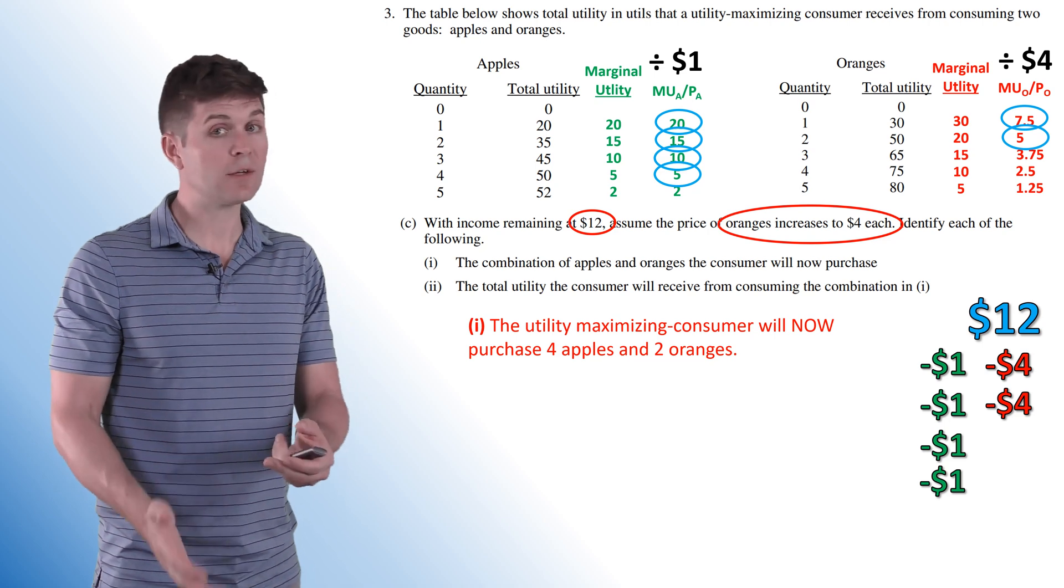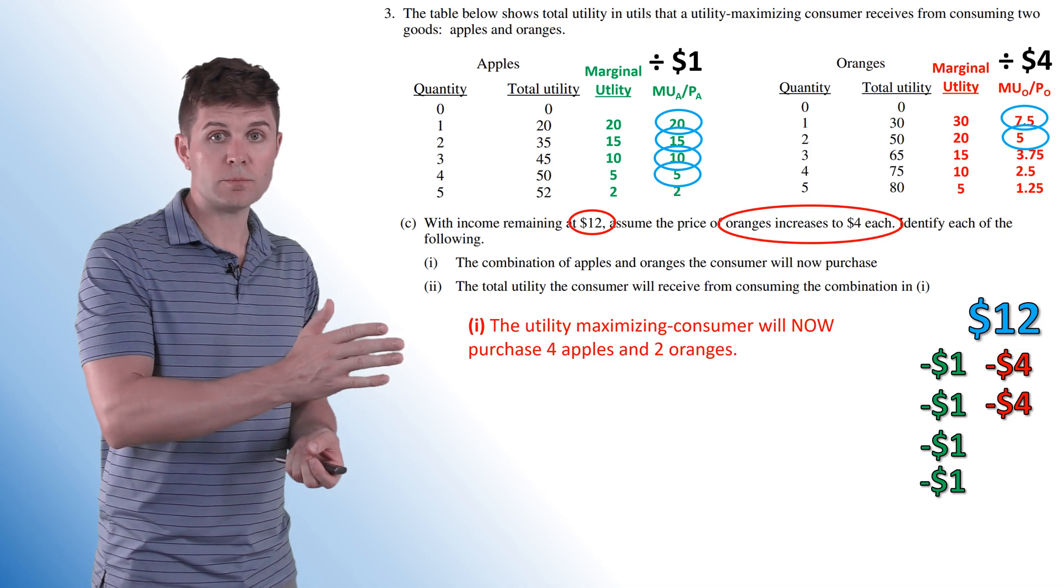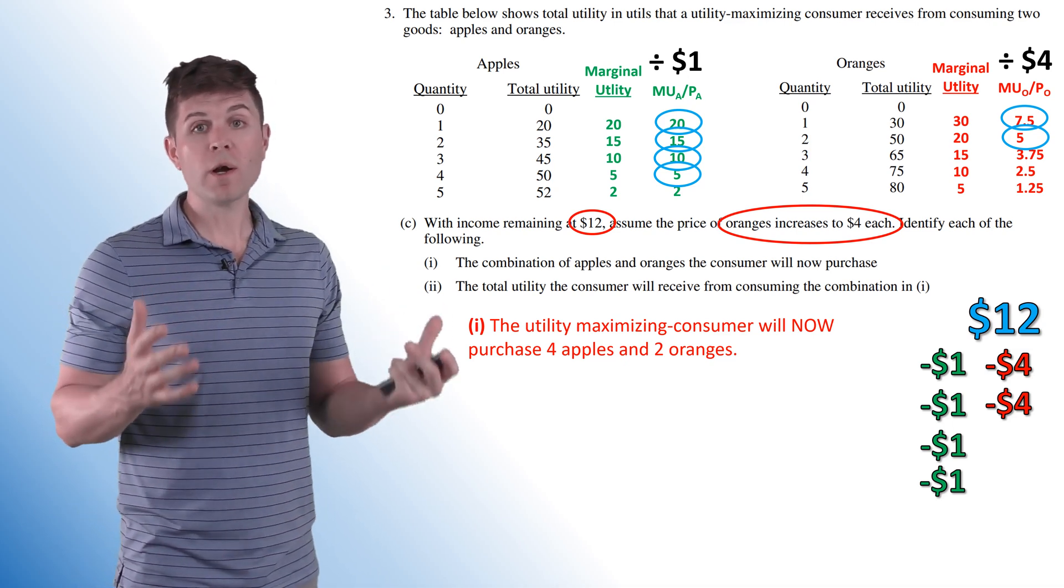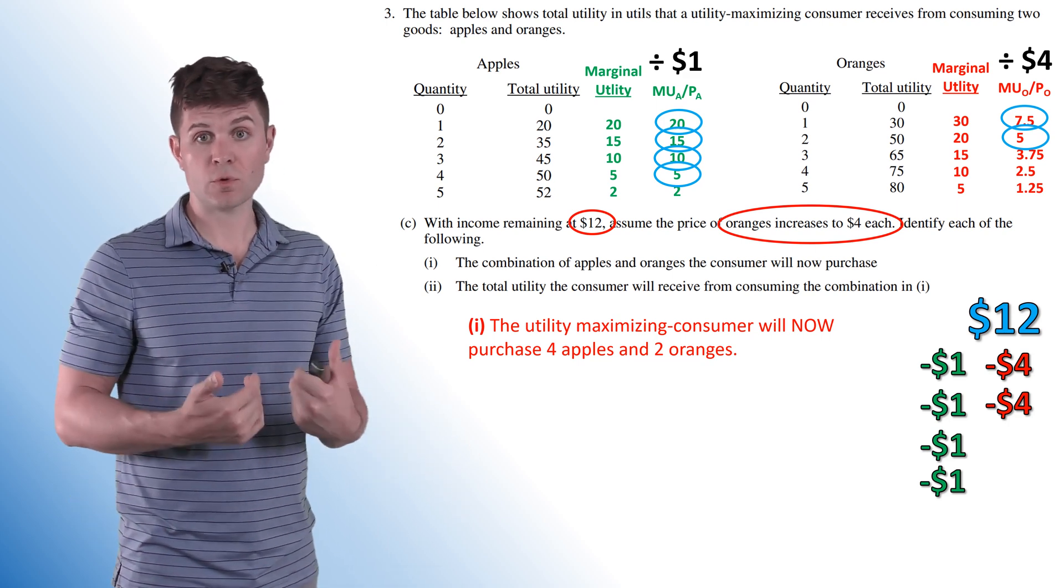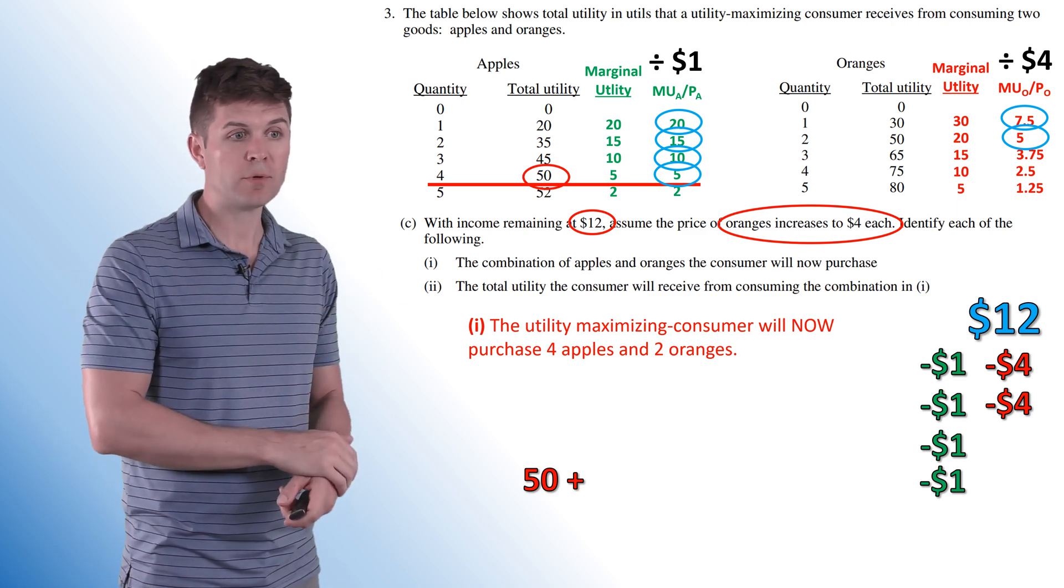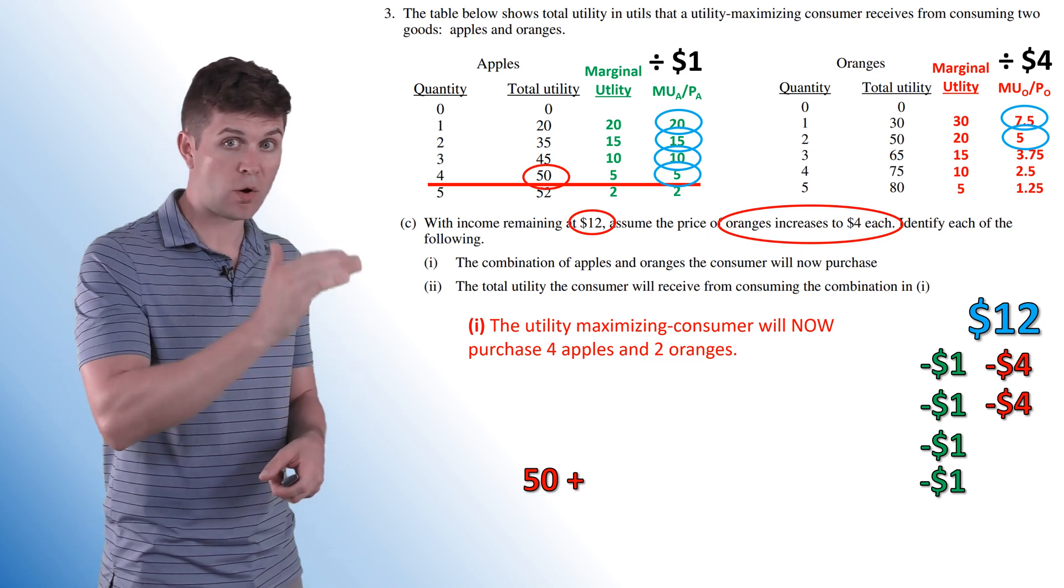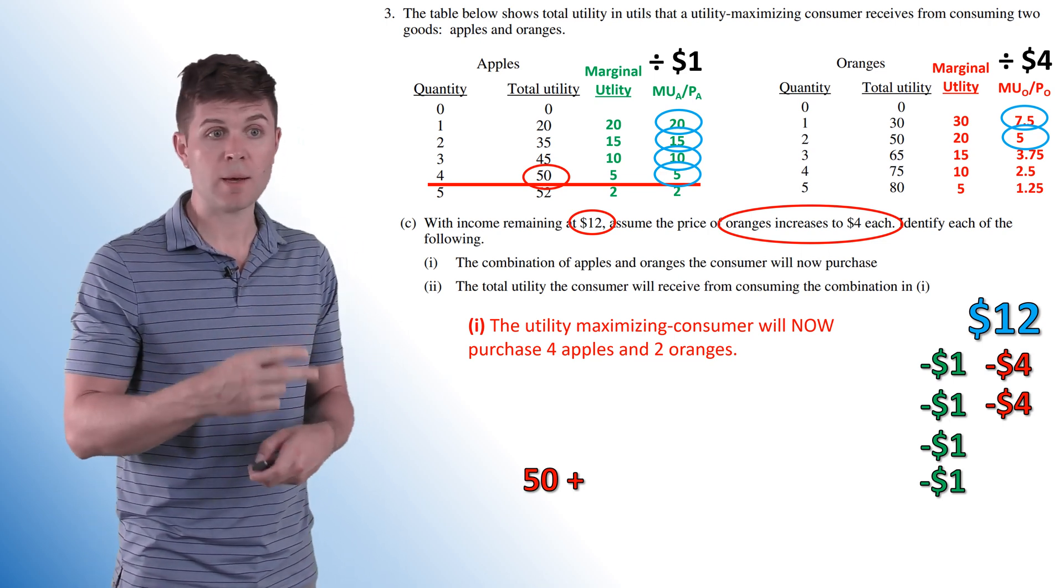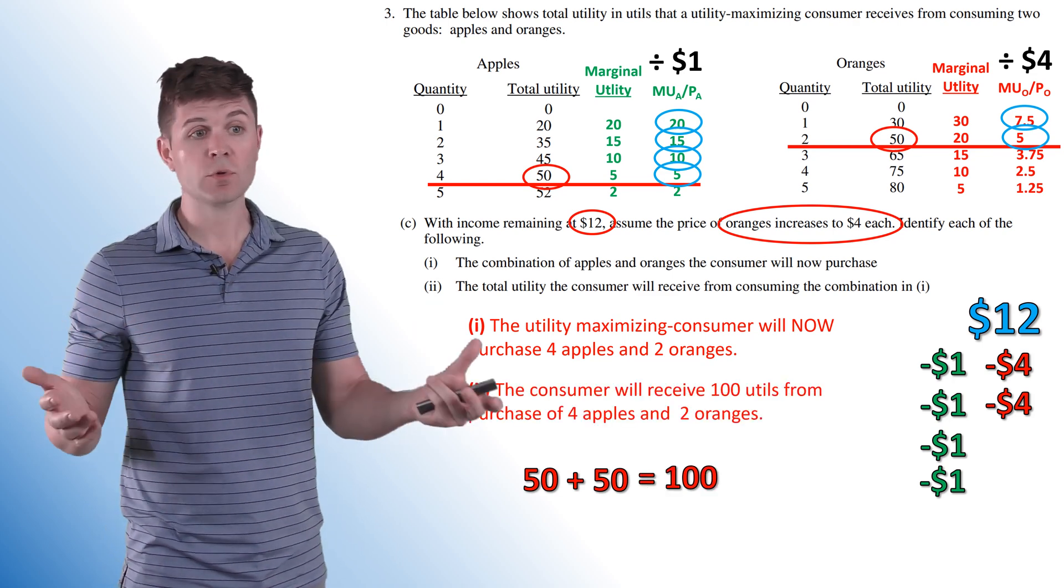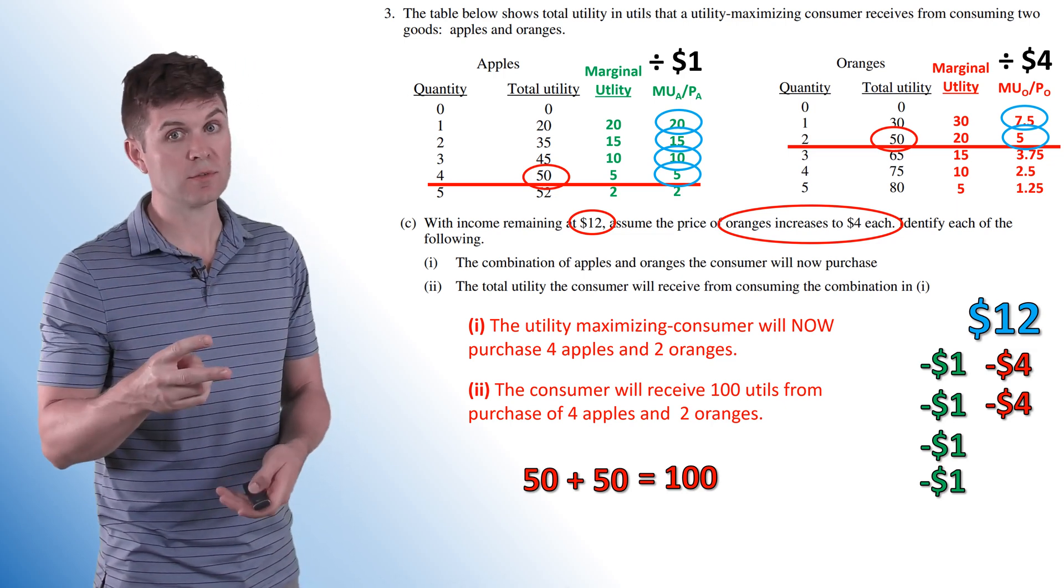Because we still have $12, it's just that the oranges became more expensive. So the per dollar marginal utility of an orange went down and it changed the combination. So what is the total utility the consumer is going to receive from this new combination? So let's take a look at it. We're still getting four apples. So I'm still getting 50 utility from apples. That's total utility from all four of those apples. And we jump over to oranges. We only bought two of them. So our total utility at two oranges is 50 as well. So in this case, the consumer is going to receive 100 utils from the purchases of four apples and two oranges.